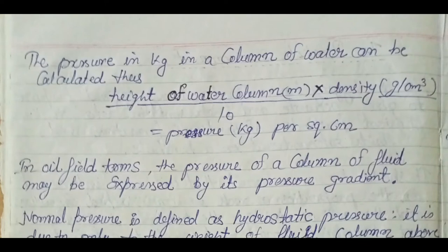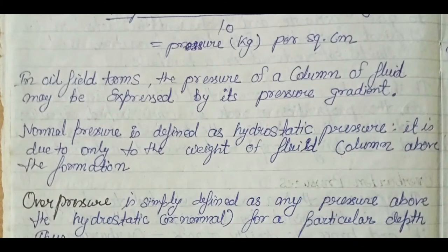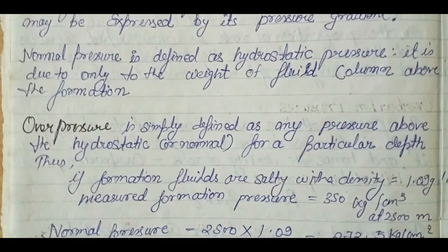To calculate pressure: height of the water column multiplied by density, divided by 10, giving the result in kg per square centimeter. Normal pressure is defined as the hydrostatic pressure due only to the weight of the fluid column above the formation. Do not confuse drilling mud pressure with the normal pressure exerted by oil and gas. Overpressure is any pressure above this normal pressure — any formation fluid pressure above the hydrostatic level is known as overpressure.